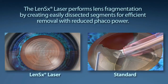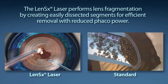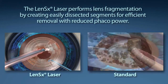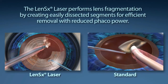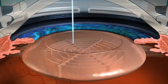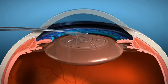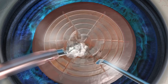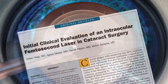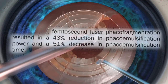Standard cataract surgery requires a phacoemulsification machine to segment and remove the content of the cataract. The goal of your surgeon is to reduce the amount of phaco energy used to remove your cataract. The LensX laser performs lens fragmentation, creating easily dissected segments for efficient removal with little or no phaco power. With the laser pulses utilized, the LensX laser provides the surgeon a 43% reduction in phaco power and 51% reduction in phaco time compared to the standard cataract procedure.